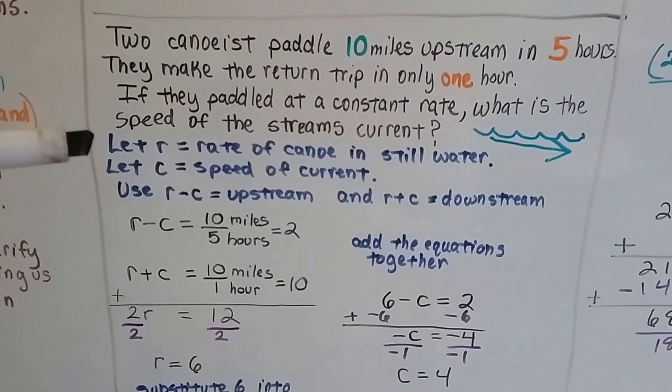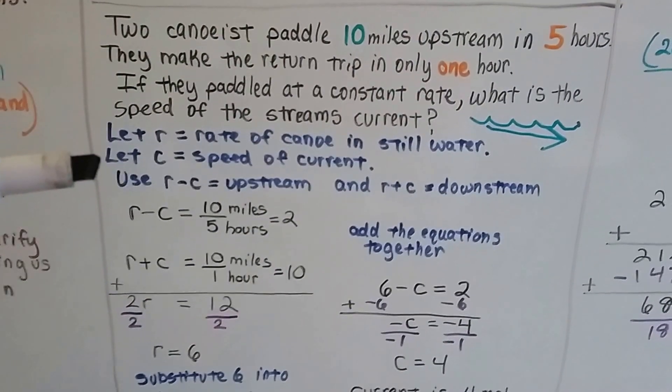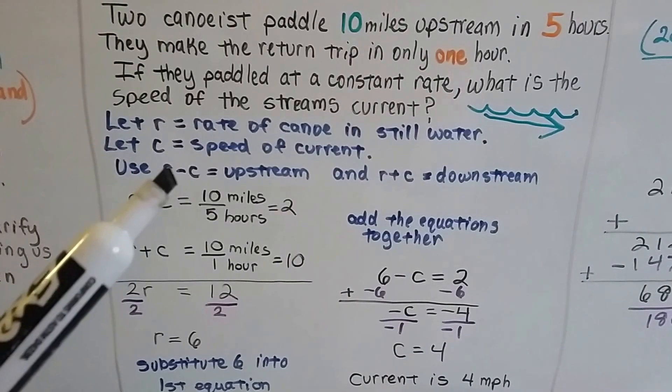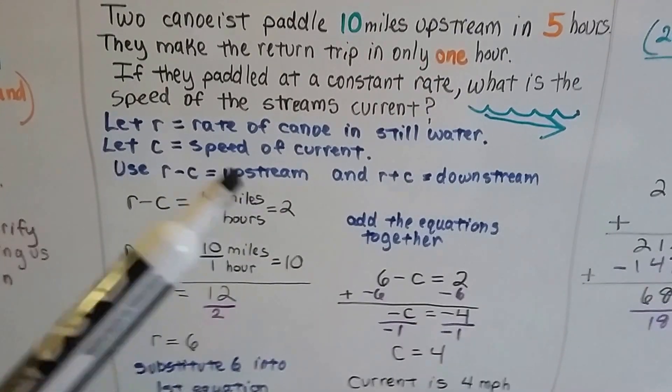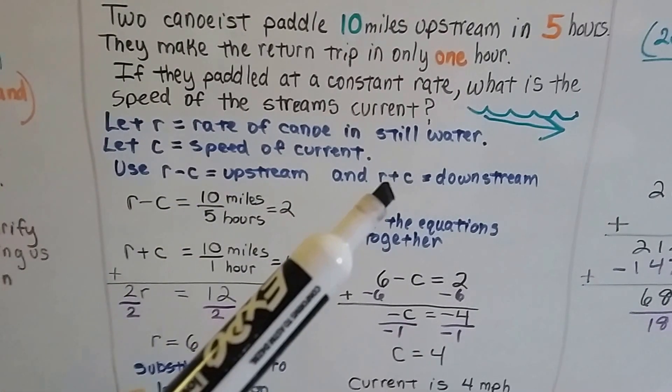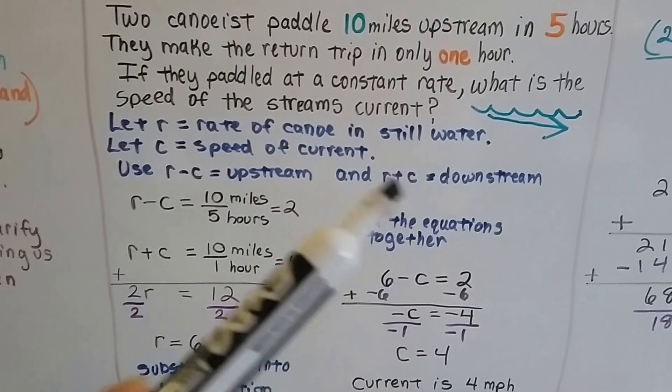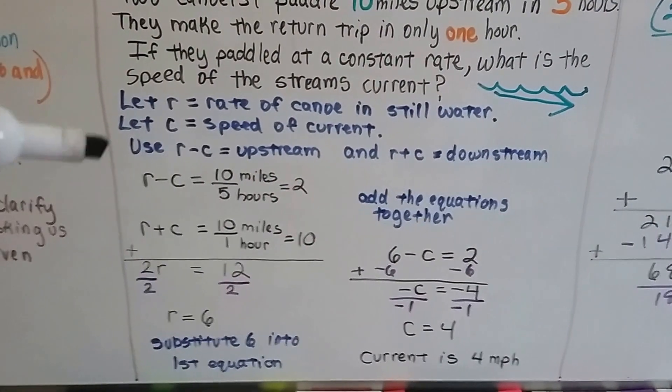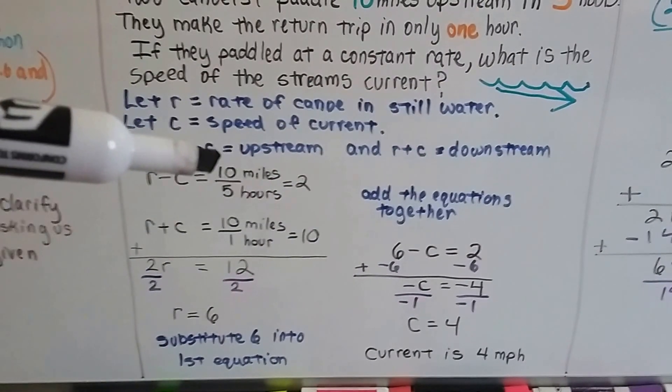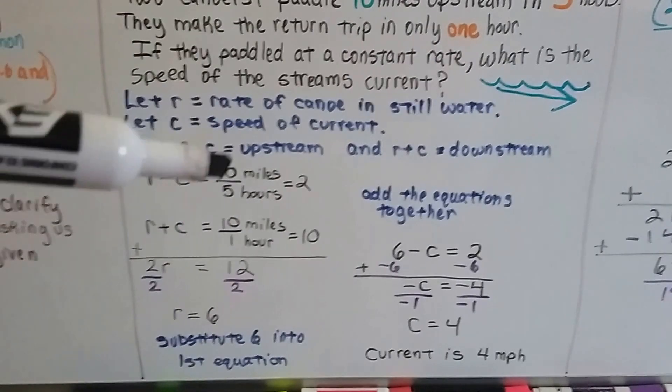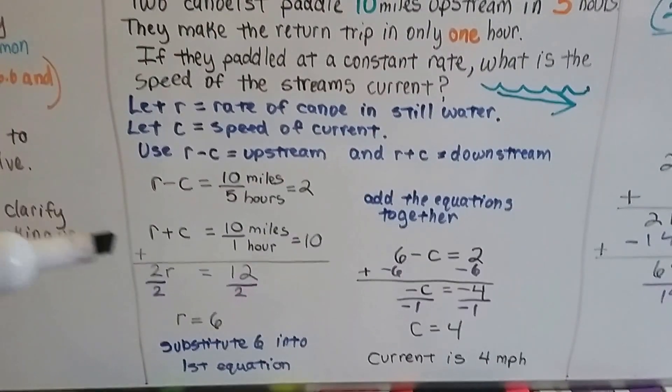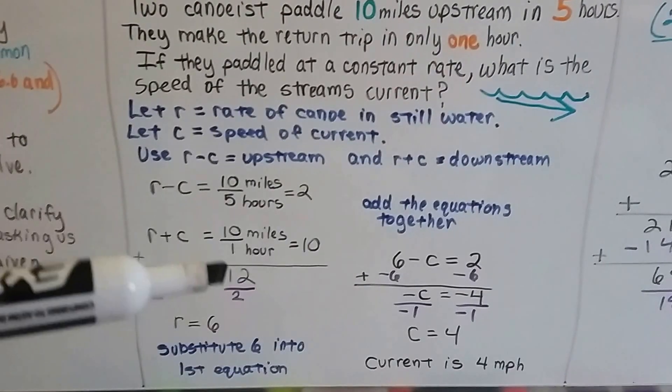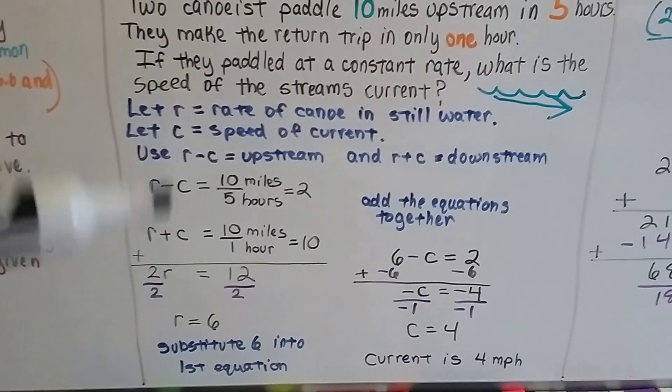So we're going to let r equal the rate of the canoe in still water. We're going to let c equal the speed of the current of the stream. And we're going to use r minus c for when they were going upstream because they were fighting against it. And we're going to use r plus c because they were going with the current, so it's plus the current downstream. So we've got r minus c is going to equal ten miles in five hours. Ten over five, that's a two. And r plus c, when they were going with the current, is ten miles in one hour, so that's ten over one, that's a ten.